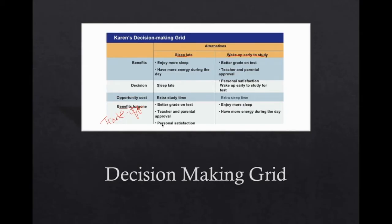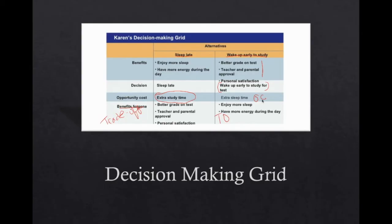You might also lose some personal satisfaction — feeling bad about yourself because you didn't do your studying. But the biggest thing is when you weigh it: the most desirable thing that you're giving up is the extra study time. That would be your top priority, the thing you're really giving up. On the other side, if you were to wake up early and study, you'd have your benefits. Your decision is to wake up early to study for your tests. Your trade-offs are all those alternatives, and your opportunity cost is that extra sleep time you didn't get — the most desirable thing you went without.